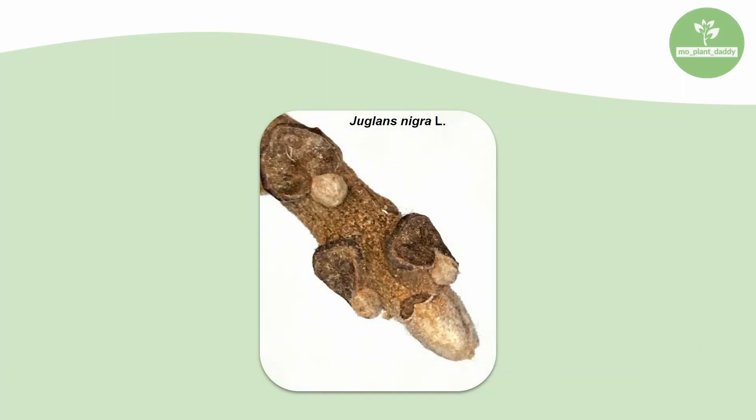For instance, here's a picture of the apical and lateral buds of black walnut. The apical bud is at the end of the twig, is larger and more oblong than the lateral buds. There are three lateral buds on this black walnut twig. They are smaller and more circular than the apical bud.